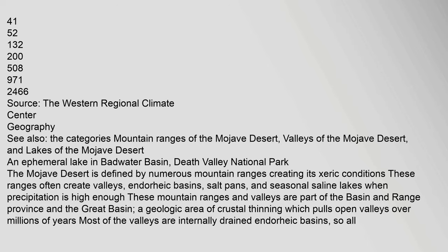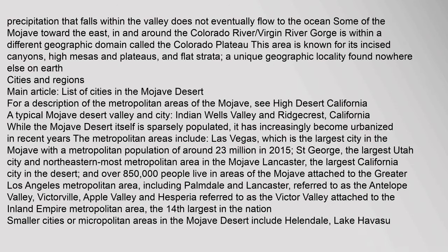Most of the valleys are internally drained endorheic basins, so all precipitation that falls within the valley does not eventually flow to the ocean. Some of the Mojave toward the east, in and around the Colorado River and Virgin River Gorge, is within a different geographic domain called the Colorado Plateau. This area is known for its incised canyons, high mesas and plateaus, and flat strata — a unique geographic locality found nowhere else on Earth.